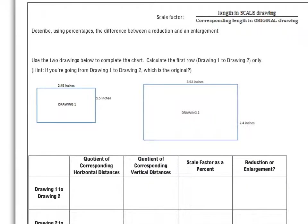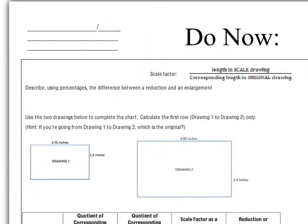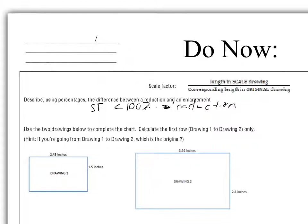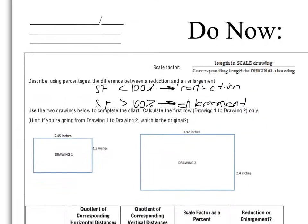Looking at our do now, the first thing we're asked to do is use percentages to describe the difference between reduction and enlargement. This goes back to one of the key points from our classwork yesterday: a scale factor that is less than 100% is a reduction, and a scale factor that is greater than 100% is an enlargement. That's one way we can constantly be checking ourselves in our work.